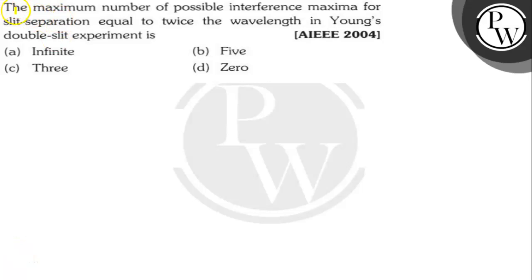Hello Achoo, let's read the question. The question says here, the maximum number of possible interference maxima for slit separation equal to twice the wavelength in Young's double slit experiment is what?